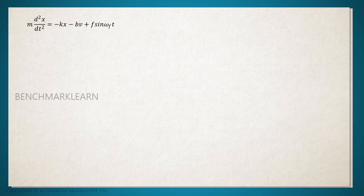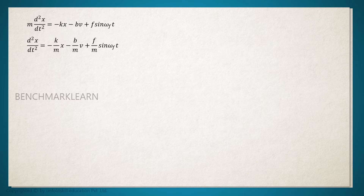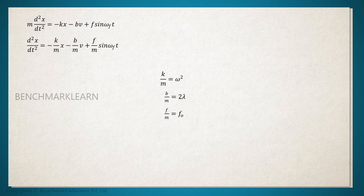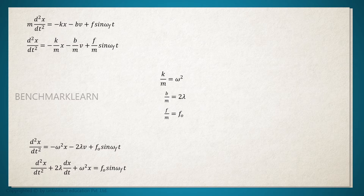The equation of motion is m times d²x/dt² equals minus kx minus bv plus F sine omega_f t. Dividing the whole equation by m, it becomes d²x/dt² equals minus (k/m)x minus (b/m)v plus (F/m) sine omega_f t. We know that k/m equals omega², b/m equals 2 lambda, and letting F/m equal f₀, the equation becomes: d²x/dt² plus 2 lambda dx/dt plus omega² x equals f₀ sin(omega_f t).